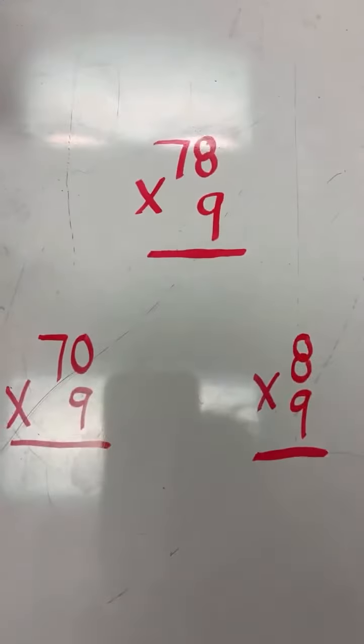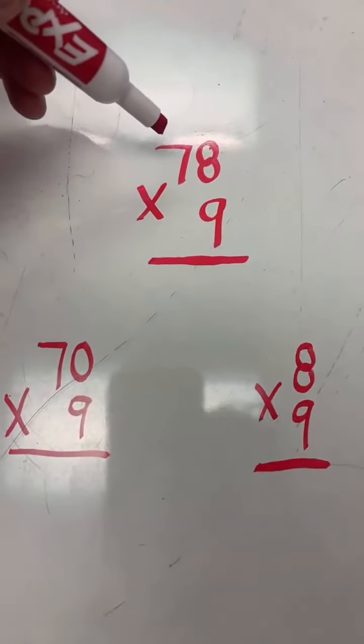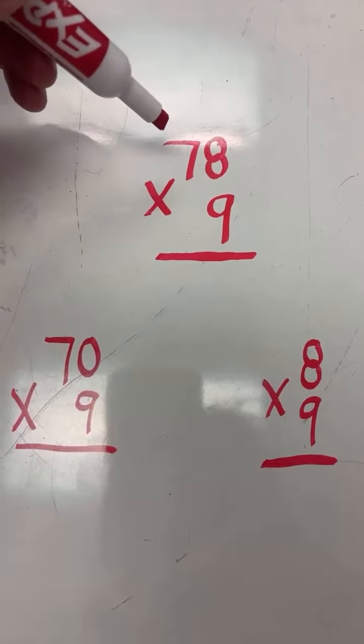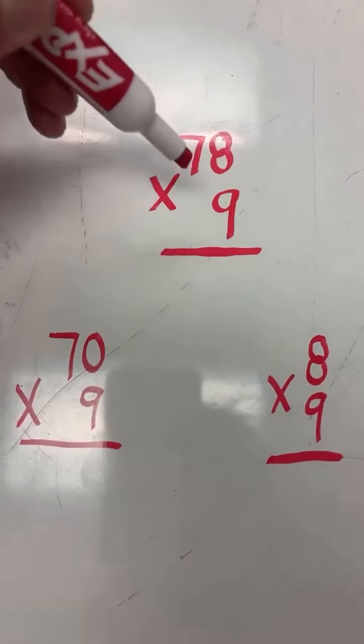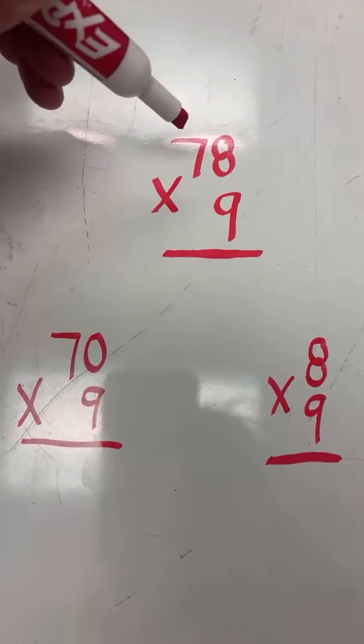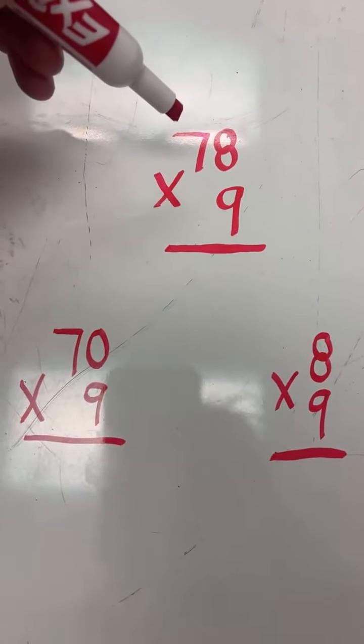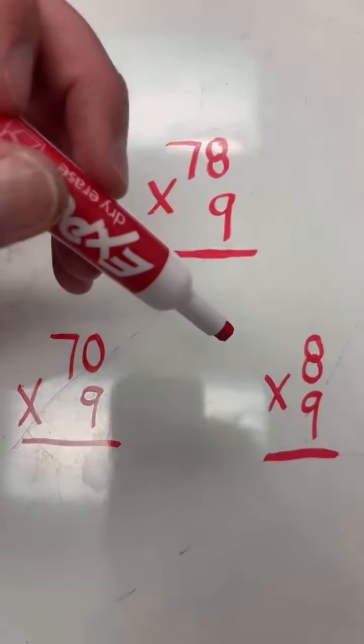So the number in the tens place is 7. 7 tens is equal to 70, so we're going to multiply 8 times 9, we're going to multiply 70 times 9, and our two answers we're going to add those two answers together to get our final answer.